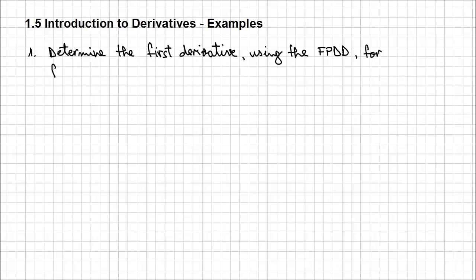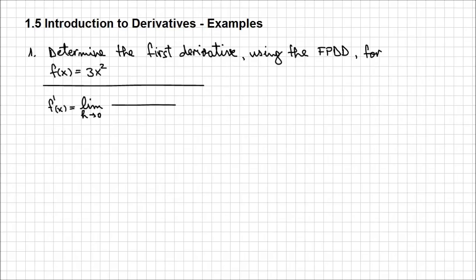Remember, the first principles definition says that f prime of x — the derivative of f of x — is the limit when h approaches 0 of f of x plus h minus f of x, all over h. It's a good idea to evaluate f of x and f of x plus h separately.